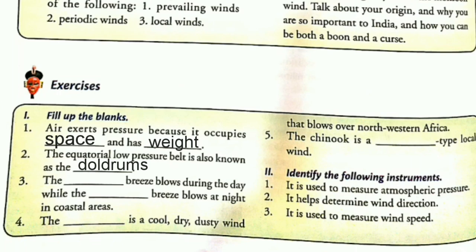Next: the blank breeze blows during the day while the blank breeze blows at night in coastal areas. Answer: the sea breeze blows during the day while the land breeze blows at night in coastal areas. Next: the blank is a cool, dry, dusty wind that blows over northwestern Africa. Answer: the Harmattan.